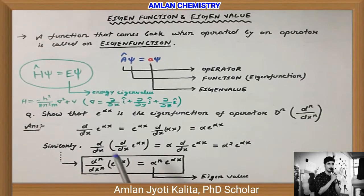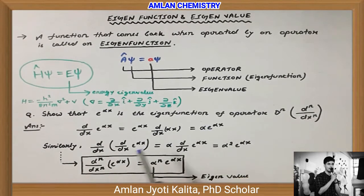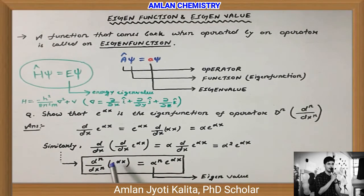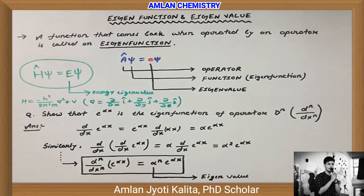Iska matlab, agar e^(αx) ko n times differentiate karo — d^n/dx^n of e^(αx) — toh humko milega α^n · e^(αx). First order ke liye α · e^(αx), second order ke liye α² · e^(αx), similarly n times ke liye α^n · e^(αx). Isko dhyan se dekhiye: e^(αx) ko n times differentiate karne ke baad result mein humko e^(αx) hi mila hai, multiplied by α^n.